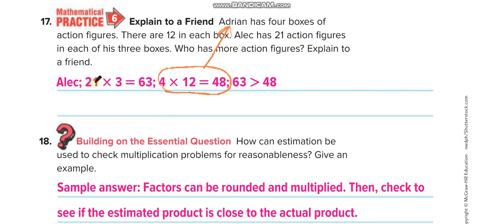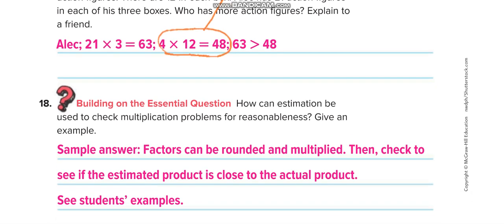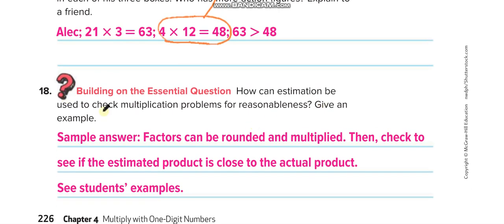So who has more action figures? Of course Alec, 63. How can estimation be used to check multiplication problems for reasonableness? Give an example.